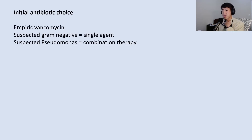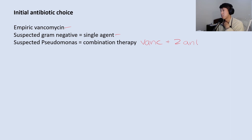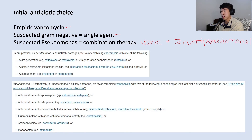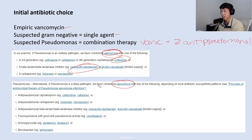For empiric antibiotic therapy of sepsis, everyone should receive empiric vancomycin. If gram-negative infection is suspected — which applies to most patients — add a single gram-negative agent. If pseudomonal infection is suspected, give vancomycin plus two antipseudomonal agents. A very common combination is vancomycin and cefepime; another common combination is vancomycin and piperacillin-tazobactam (Zosyn). If pseudomonas is suspected, you would use vancomycin, cefepime, and an additional antipseudomonal agent, though this is less commonly needed.